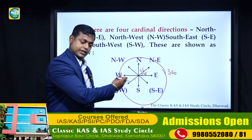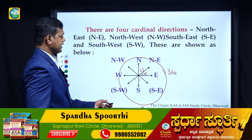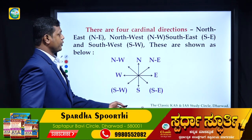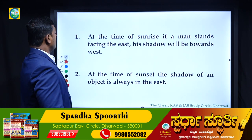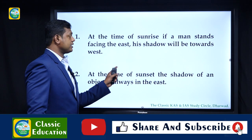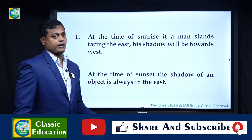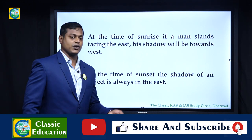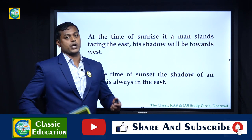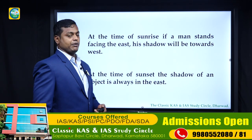This is the first basic rule. Now the next very important point to remember: when solving problems we need to know - if you are standing facing east, north, or west, where will the shadow fall when the sun rises? For example, at the time of sunrise, if a man stands facing east, his shadow will be towards the west.